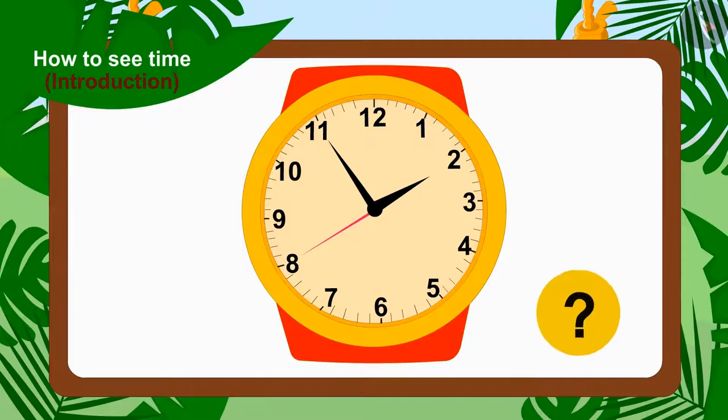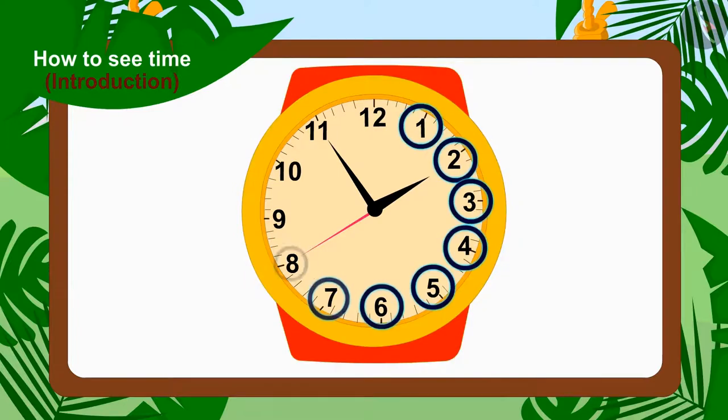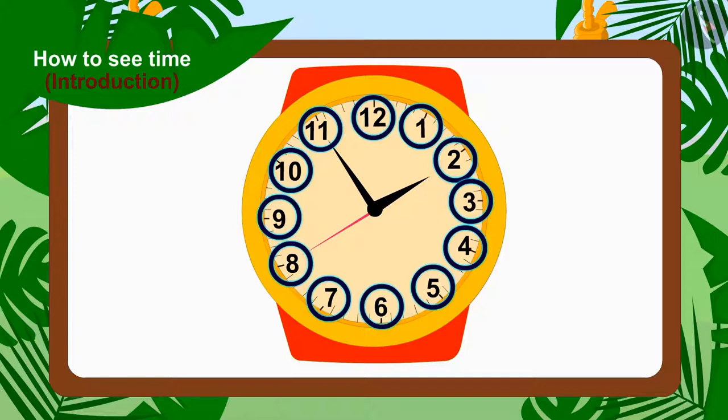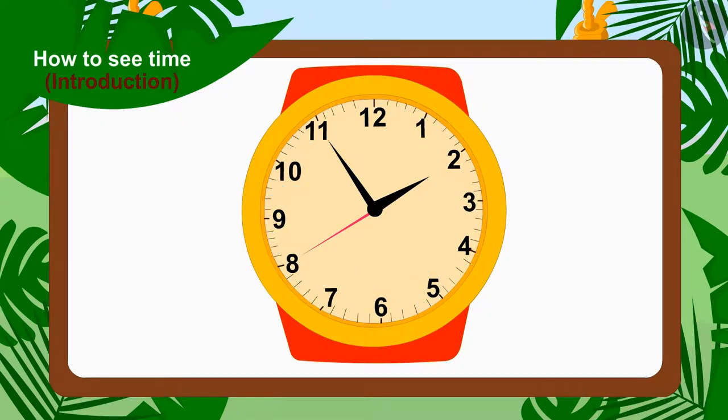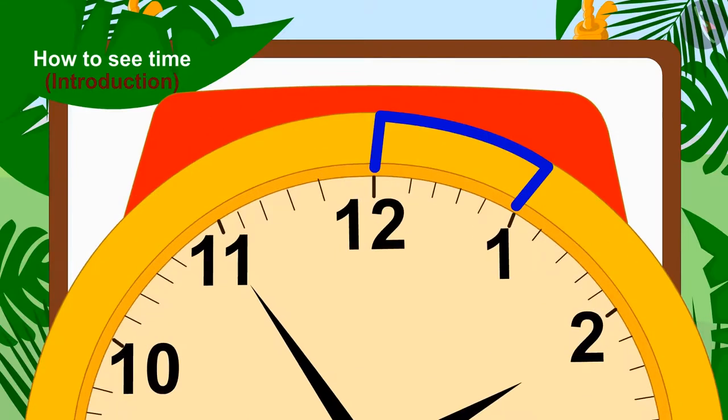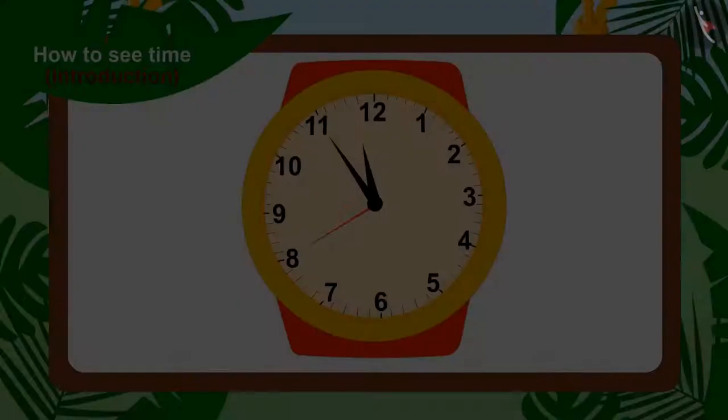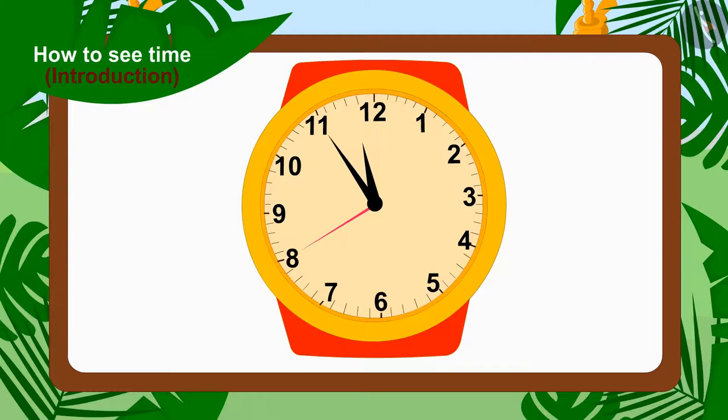Kids, do you know how to tell the time on a watch? No? No problem, look here. In a watch, there are numbers from 1 to 12 written in this manner. The entire watch consists of 60 minutes, and they are divided between 12 numbers. So each part is of 5 minutes. And if you look closely, you will find that there are 4 small lines in each part. In this way, every short line is equal to 1 minute. Let us see how we can tell the time on this watch.